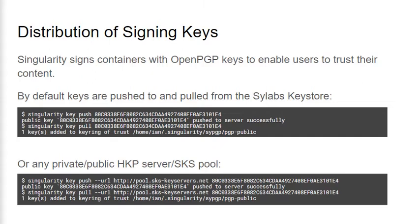Alongside the distribution of images comes the need to distribute keys used to sign SIF images. In order to encourage container signing as a best practice, Singularity doesn't allow users to push unsigned images by default. Users must sign their images or pass an additional flag. Singularity uses OpenPGP keys under the hood to sign images and provides a key command group to keep key management easy for users. This lets you create, import, or export keys locally or through remote key stores. Singularity uses the Scilabs key store as its default when pushing or pulling keys, so we can push to or pull from that key store easily with these commands that use a key fingerprint. But it's also possible to use any HKP server or SKS pool as remote key stores. We can simply pass the URL flag to specify the remote key store we want to interact with — in this case, I'm using a well-known public SKS pool.